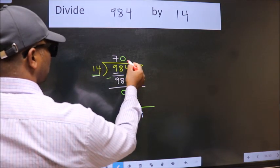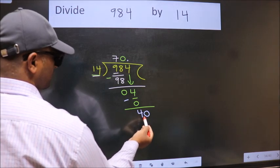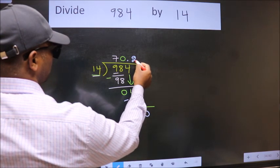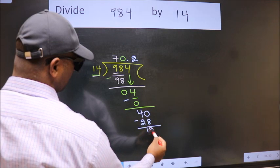So now we can put dot and take 0. So 40. A number close to 40 in 14 table is 14 twos, 28. Now we subtract. We get 12.